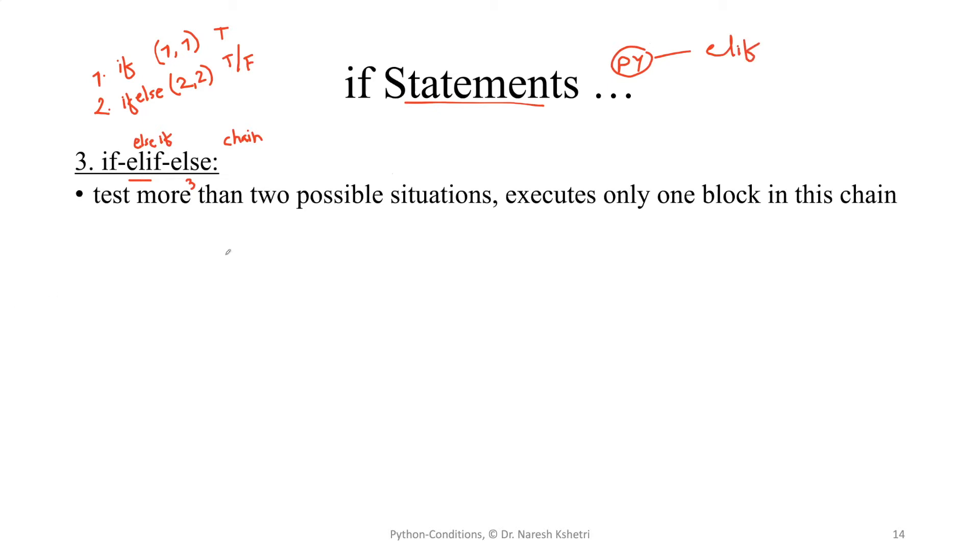So test more than two possible situations. So here is the third possible situation. In other words, we can either say true works and the other situation two and that executes only one block in the chain.